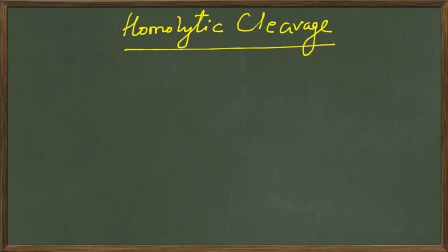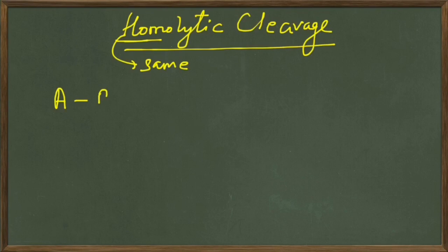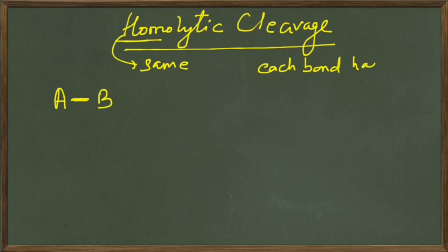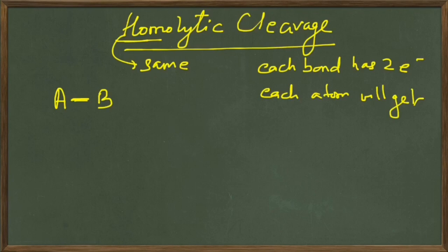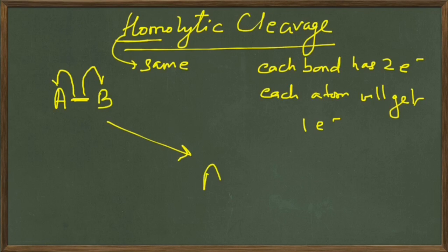Let's talk about homolytic cleavage. 'Homo' means same, so in this type of bond cleavage the species will get an equal amount of electrons. For example, if we have A-B with a bond between them, each bond has two electrons, so when this bond breaks we divide them equally. Each atom or species gets one electron, and we draw this with a half arrow, where half means one electron.